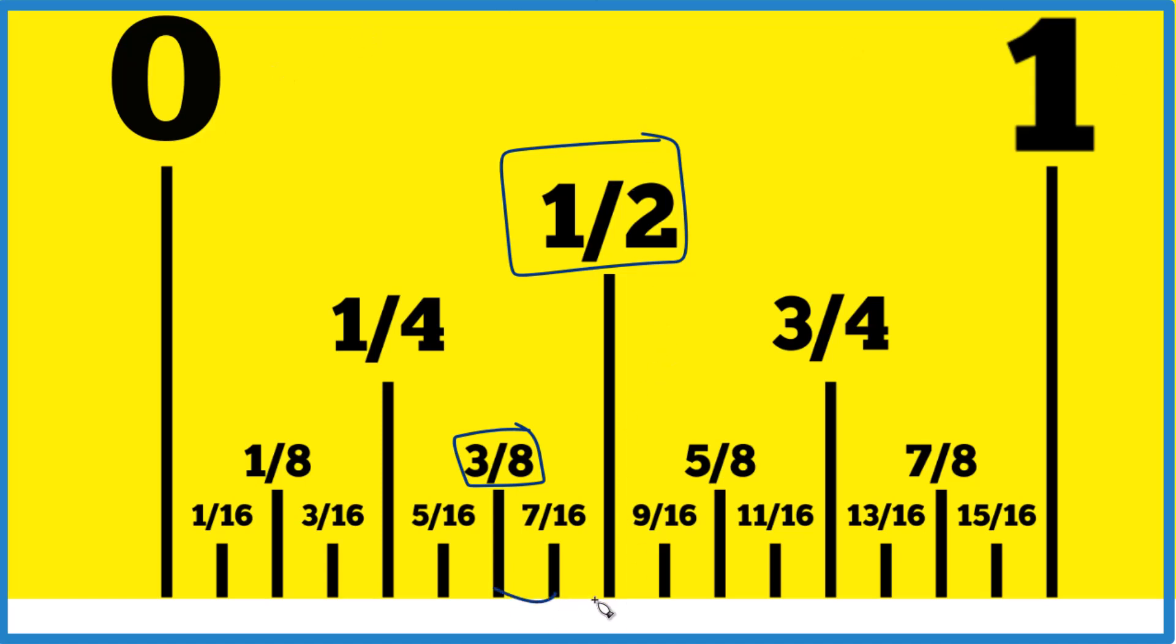And right between it, right down here between it, we see that we have seven-sixteenths. So in answer to our question, between three-eighths of an inch and one-half of an inch, you have seven-sixteenths of an inch. The problem is lots of times on a ruler or a tape measure, you don't see these numbers here written in.